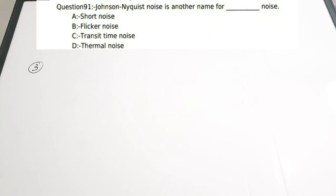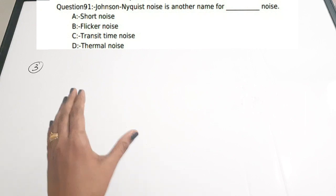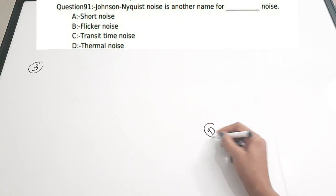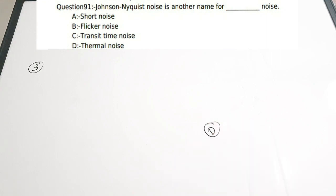Third question: Johnson-Nyquist noise is another name for — dash. Options: a) shot noise, b) flicker noise, c) transit time noise, d) thermal noise. Thermal noise, also called white noise, has another name: Johnson-Nyquist noise. There are various names for different noises — pink noise, brown noise, etc. There is a quick revision video on all the noises in communication systems; the link will be in the description. The correct answer is option D, thermal noise.